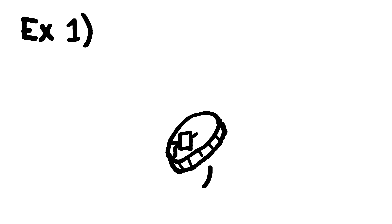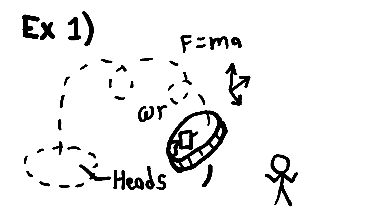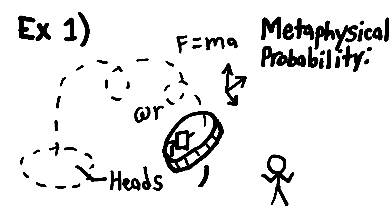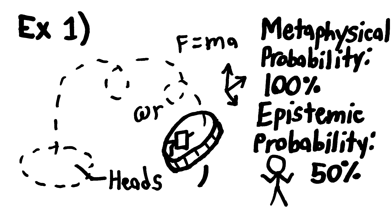A coin is flipped in such a way that, given its precise spin and momentum, the air current and so on, it will land on heads, but you don't know that. The coin in this example isn't truly random, so in terms of metaphysical probability, there's a 100% chance that the coin will land on heads. But because of your ignorance, there's an epistemic probability of 50% that the coin will land on heads.